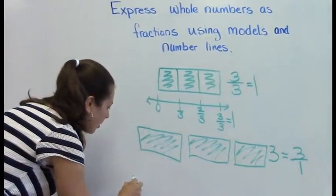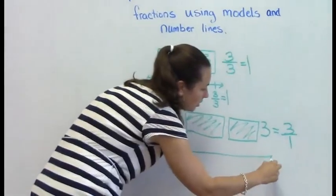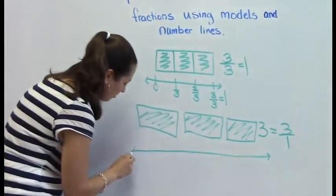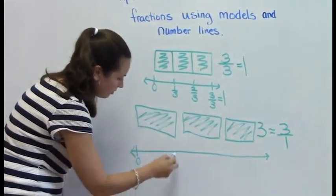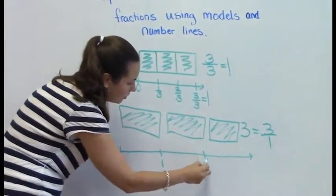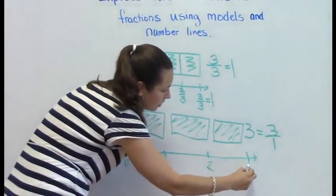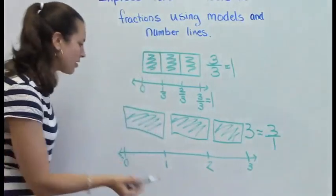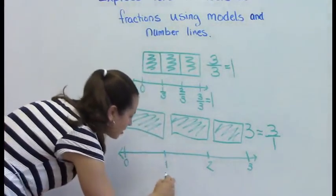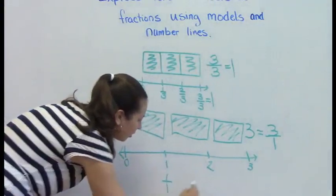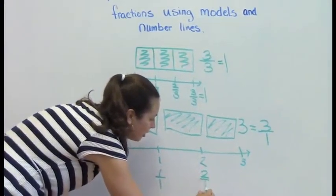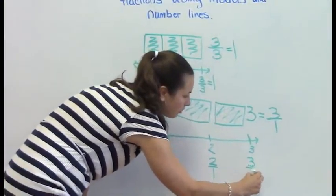If we wanted to show it on a number line, we could take our number line. We'd have zero, one, two, three rectangles. And we could show the fractions. This would be number one, two over one, three over one.